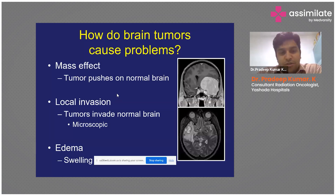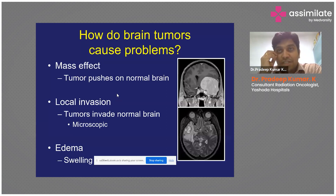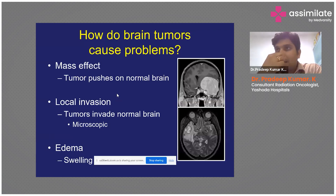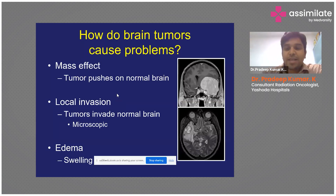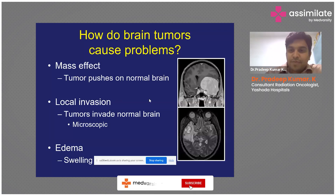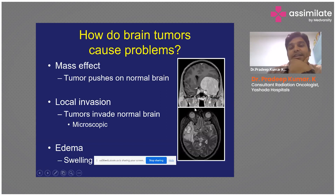Tumors also invade into normal brain tissues at the microscopic level — even though not visible grossly, they infiltrate surrounding tissues in three dimensions, disrupting functionality. Additionally, edema, or swelling around the tumor, develops when an inflammatory reaction occurs as the immune system responds to the growing mass. This edema adds further pressure on surrounding brain tissues. As you can see in the image, a large brain tumor in the upper part is causing mass effect, pushing almost half the brain to the other side, while in the lower image, the gray area surrounding the tumor represents the edema adding to the pressure effect.